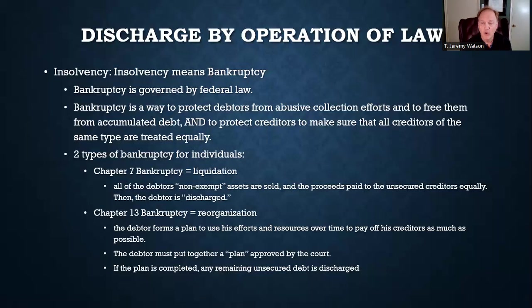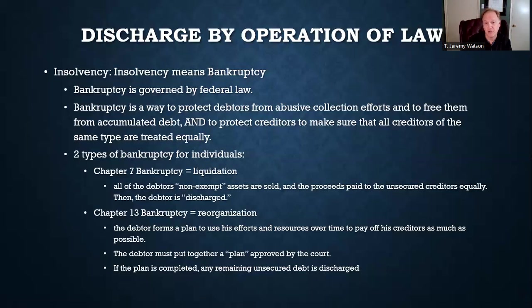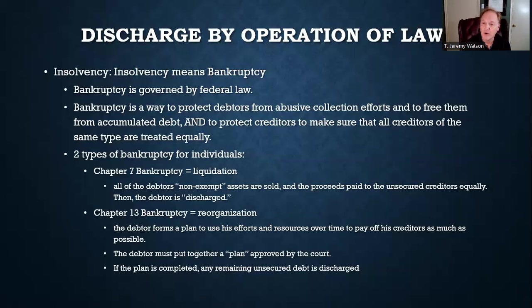In Chapter 13, the automatic stay still comes down like an iron curtain. But instead of selling off assets and paying debts, the debtor gets to keep their assets and puts together a plan that must be approved by the court — creditors get a say, but the court has power to cram the plan down on creditors if it's better for everyone. The court can reduce the amount of debt and extend payment schedules. For example, instead of a $100,000 balloon payment today, the debtor pays $30,000 a year over three years, and the court forgives the rest if the plan is completed.